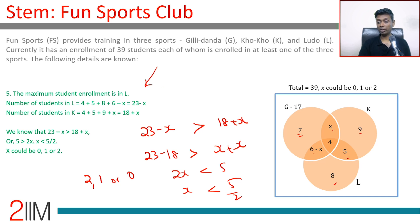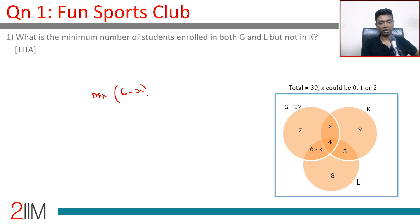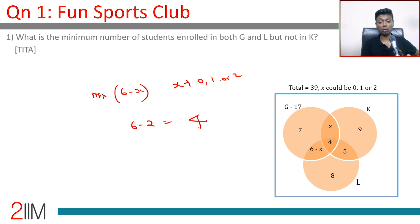Question: What is the minimum number of students enrolled in both G and L but not in K? That region is 6 minus x. To minimize it, maximize x. The maximum value of x is 2, giving 6 minus 2 equals 4. So the minimum value is 4.